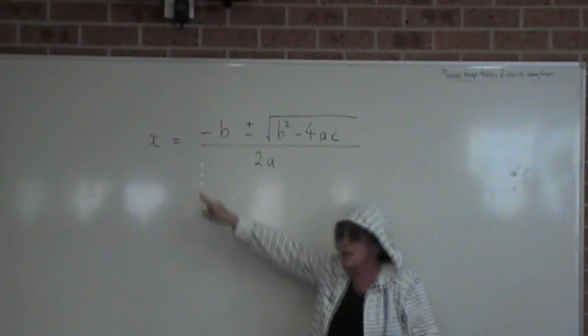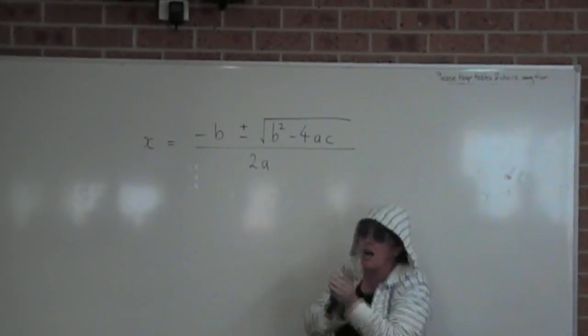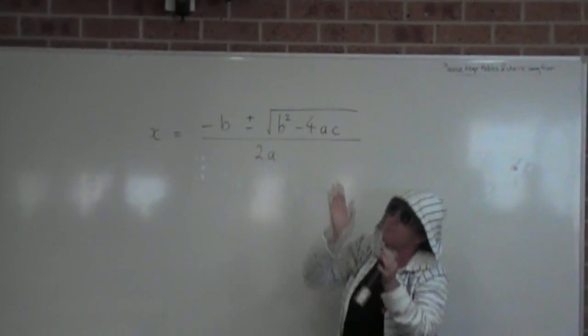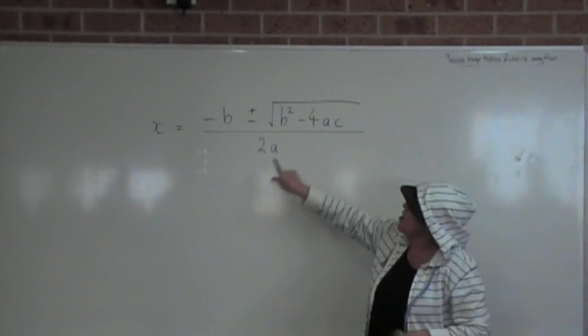X equals minus B, plus or minus square root of, B squared minus 4AC. Over 2A, let's take the round again.